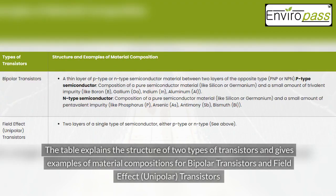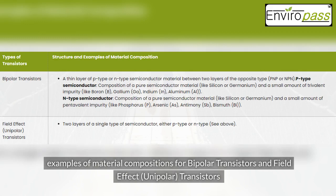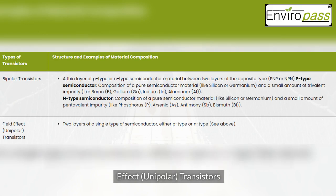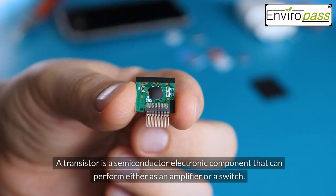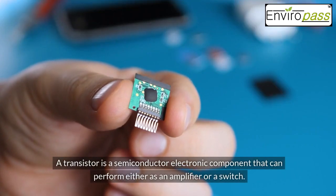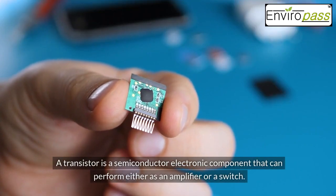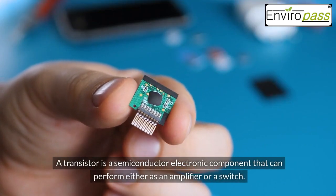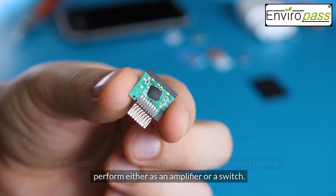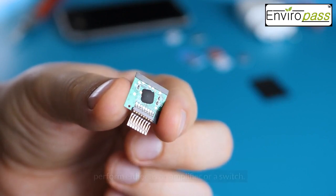The table explains the structure of two types of transistors and gives examples of material compositions for bipolar transistors and field effect (unipolar) transistors. A transistor is a semiconductor electronic component that can perform either as an amplifier or a switch.